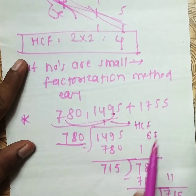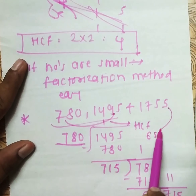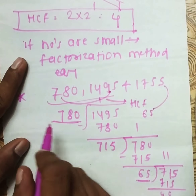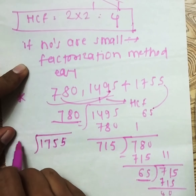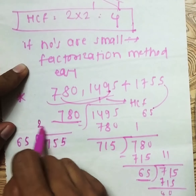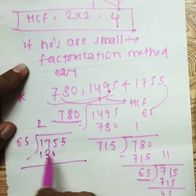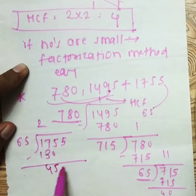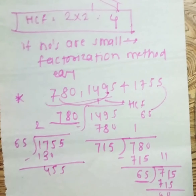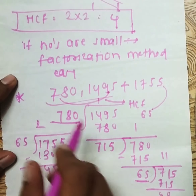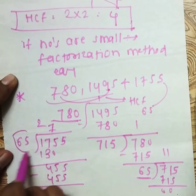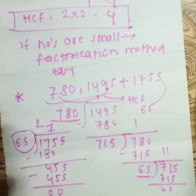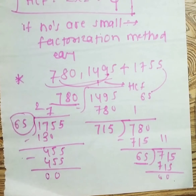Now apply the same method for the remaining number. Divide 1755 by 65. 65 twos are 130, and 65 sevens are 455, remainder 0. So 65 is the HCF of all three numbers: 780, 1495, and 1755.